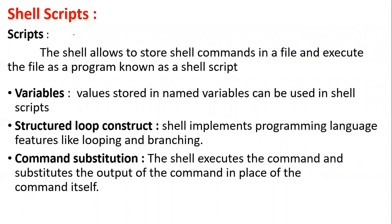A shell script allows you to store shell commands in a file and execute that file as a program. In a shell script you can use variables, defined structures, loop constructs, and command substitution. Variables store values; loops and branching are similar to other languages like C++, Java. Command substitution means the shell executes a command and substitutes the output of that command in place of the command itself.